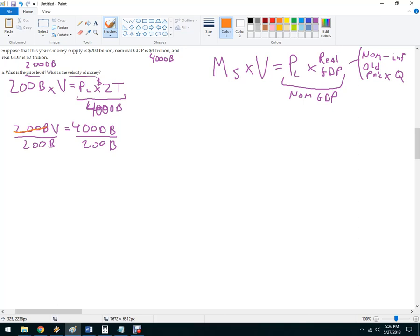I'm going to cross things out. So that whole thing crosses out. And then that crosses out, that crosses out, that crosses out. So the velocity of money is 20. These people spend money extremely fast. So now I've got that.